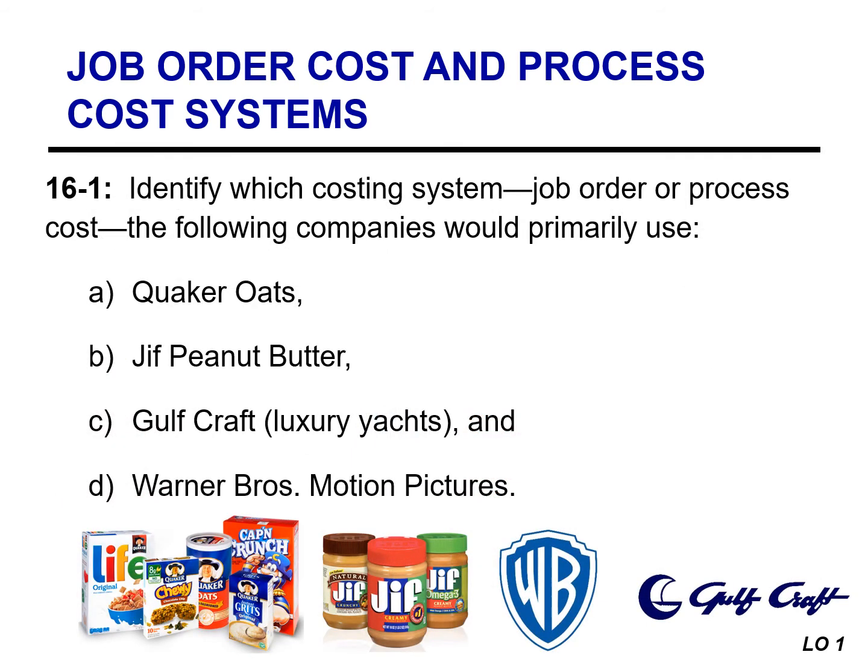In this brief exercise, you have a list of four different companies and you need to determine which costing system they would select. If the products are identical and mass produced, use a process cost system. If the product has individual and unique features, use a job order cost system. The solutions to this exercise will be provided in the next video.